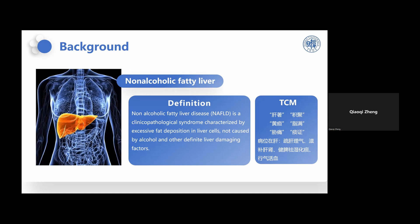In traditional Chinese medicine, NAFLD belongs to certain disease categories, and the location of the disease is in the liver. According to different syndrome types, the therapeutic methods in TCM are to smooth the liver and regulate qi, nourish the liver and kidney, strengthen the spleen, remove dampness, and promote qi and blood circulation.